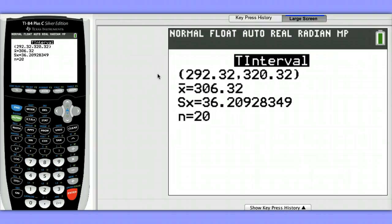I can say that we are 90% confident that the interval from 292.32 to 320.32 millivolts captures the true mean tension in the entire batch of video terminals produced that day.